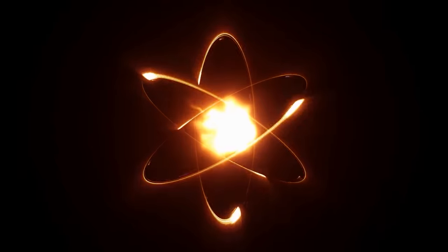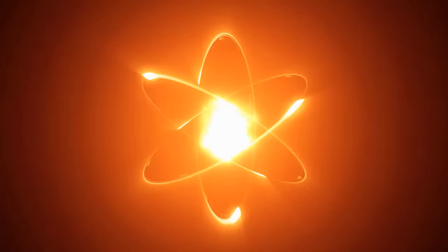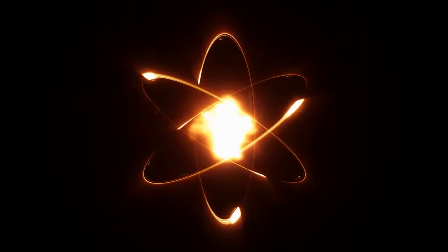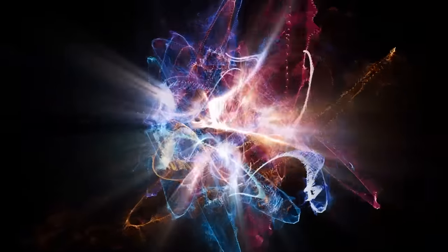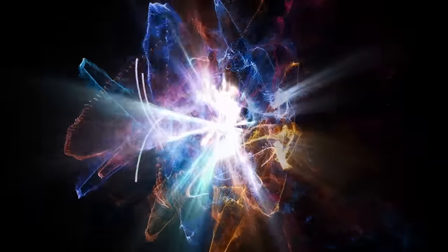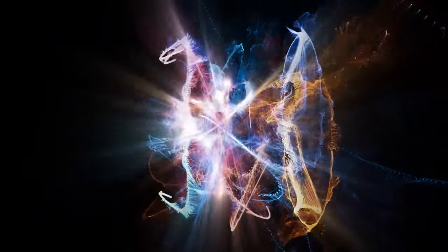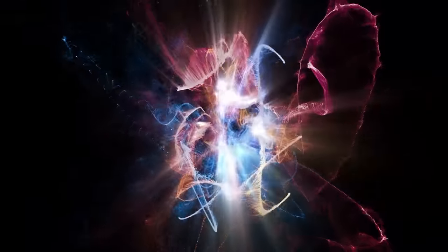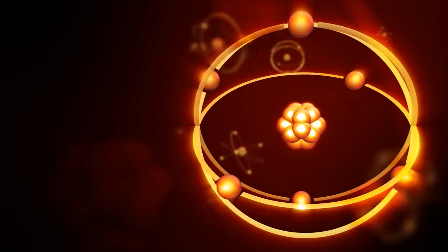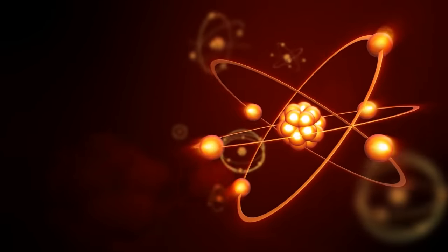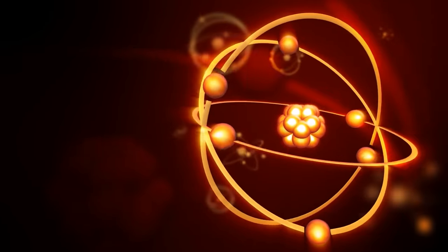In contemplating the seemingly contradictory nature of atoms, where the majority of space is considered empty, a macroscopic analogy proves illuminating. Envision a table magnified to a billion times its size, rendering its atoms comparable to melons. Despite this significant scale, the nucleus at the atom's center remains minuscule and invisible, as do the electrons in their orbital dance. The question arises, why don't objects simply pass through this apparent emptiness? And why isn't light able to permeate these atomic gaps?